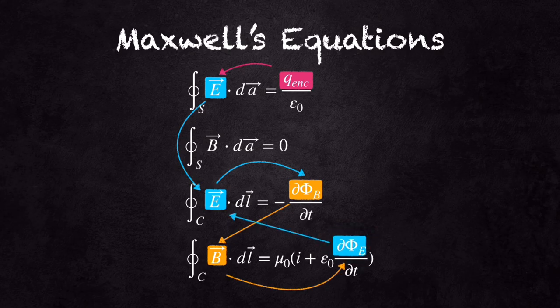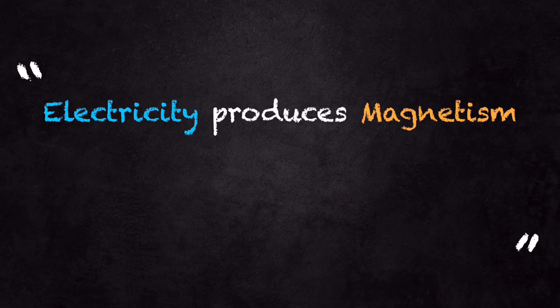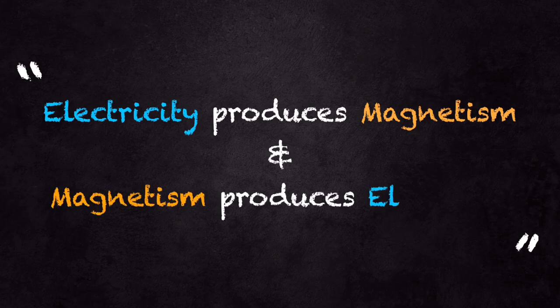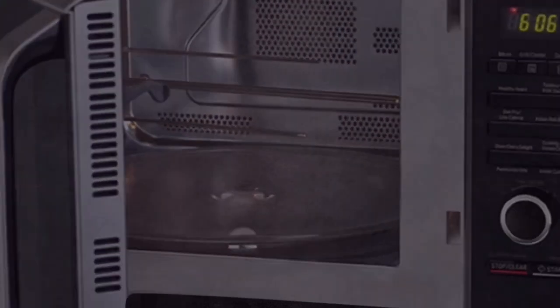All in all, this electromagnetic wave is occurred due to the principle of electricity produces magnetism and magnetism produces electricity. Well, I think you got some general ideas about how a microwave works, right?